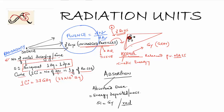The SI unit of absorbed dose is gray and the alternate unit is rad, which stands for radiation absorbed dose. One gray is equal to 100 rad. This tells us how much of the energy liberated in the form of charged particles is actually being deposited in a certain mass of tissue.